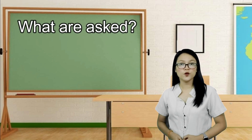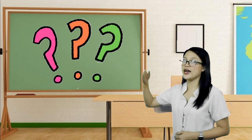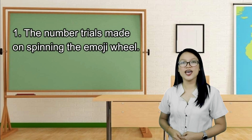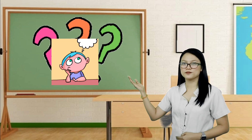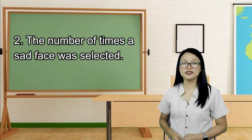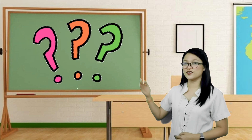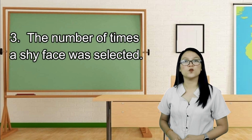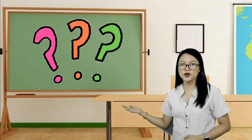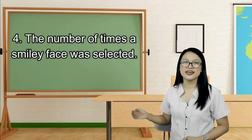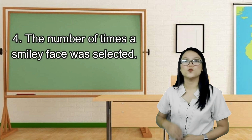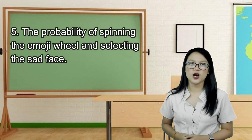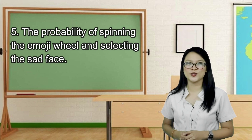What are asked? The number of trials made on spinning the emoji wheel. Second — the number of times the sad face was selected. Third — the number of times the shy face was selected. Fourth — the number of times the smile face was selected. And lastly — the probability of spinning the emoji wheel and getting the result of the sad face.